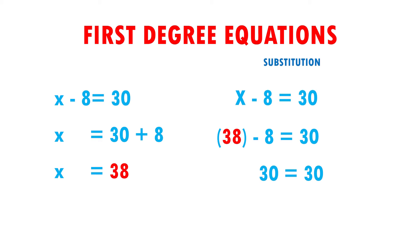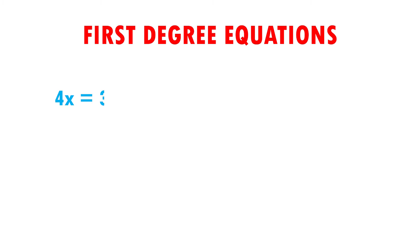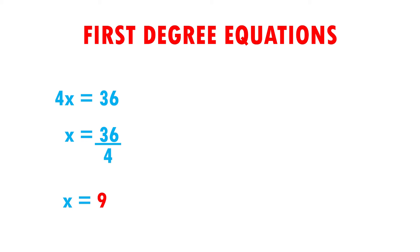Let's see another example. Here I have 4x equals 36. When there is a number next to the x, it means that it is multiplying it. In order to clear the x, I have to remove that 4. The 4 that is multiplying x passes to the other side doing the opposite of multiplying, which is dividing. I have that x is equal to 36 divided by 4. When I do the division, I have that x is equal to 9.